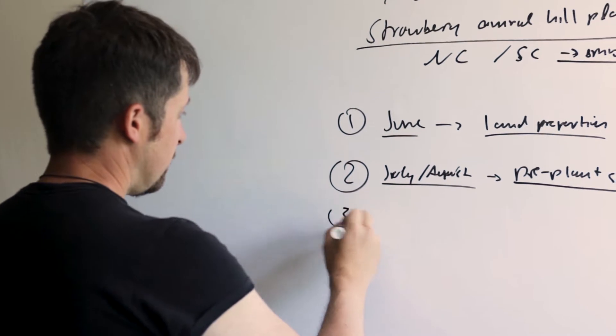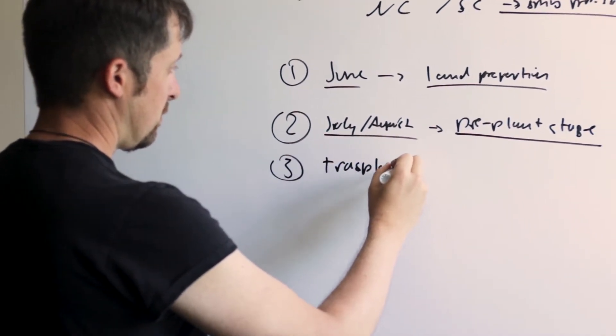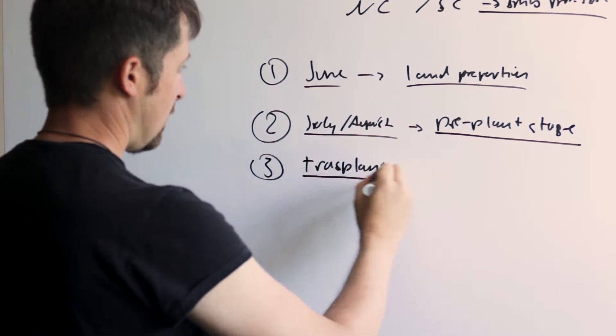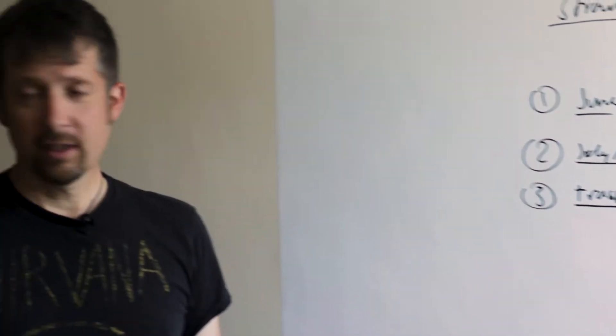The third stage is transplanting, which means that is when you plant your plants and that would be in September, in late September.